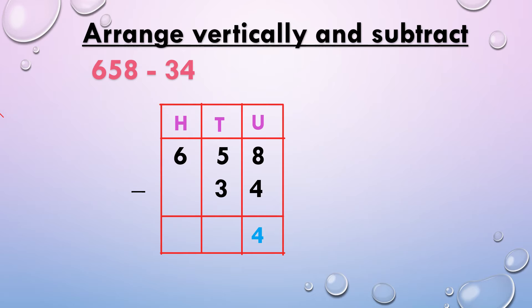5 minus 3, we get 2. 6 minus nothing means 6 minus 0, which is 6. So 658 minus 34, we get 624.